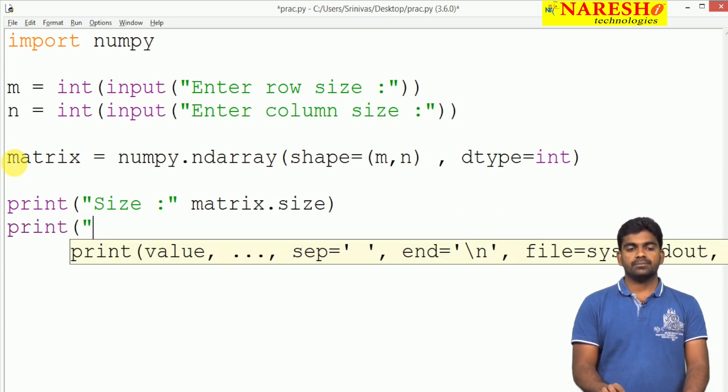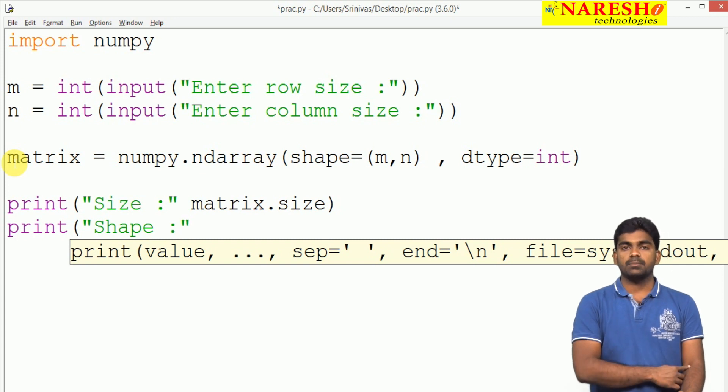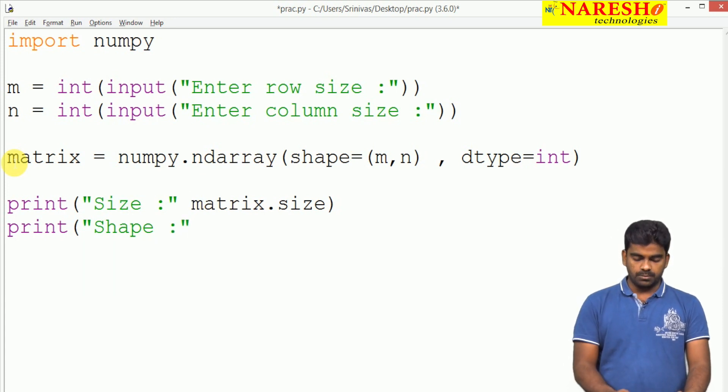Next, we print the shape we mentioned. That is m comma n - matrix.shape.